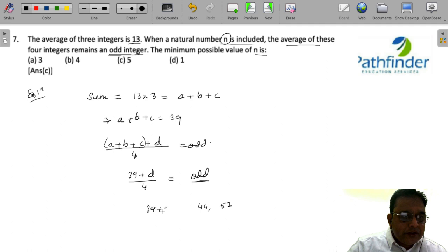So, 39 plus d must give you 44 or 52. Not 52 but 44 only. Why? Because it is the smallest odd multiple of 4 above 39. So, you will get the value of d as 5. Option c, which should be your answer.